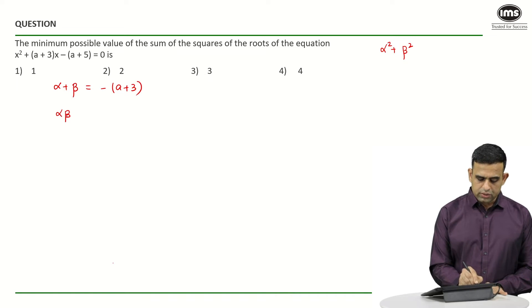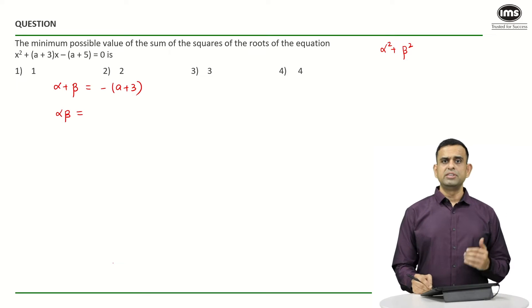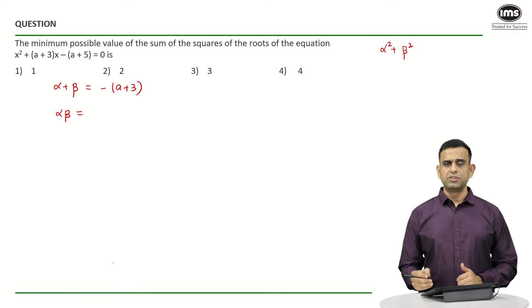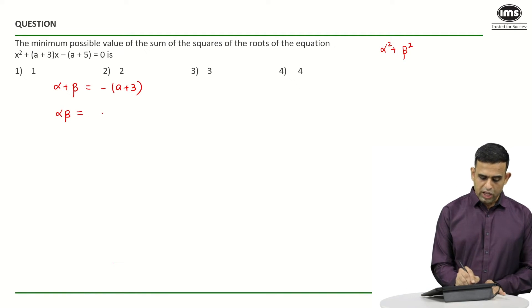And what about the product? It should be equal to c/a. c happens to be -(a+5), a is 1. So αβ becomes -(a+5).